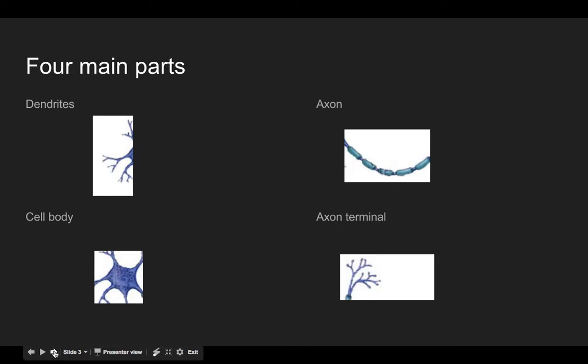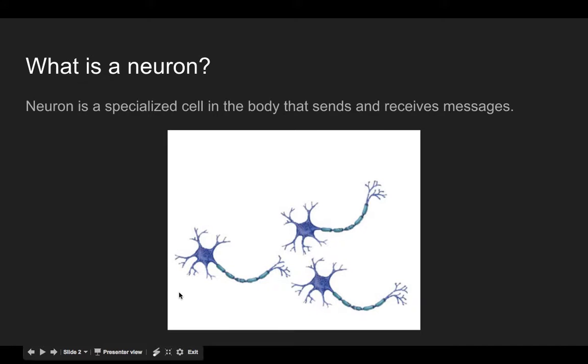The neuron has four main parts. So I'm going to go back here. Four main parts. Here's one part where my mouse is. Here's the second. Here's the third. And here's the fourth.